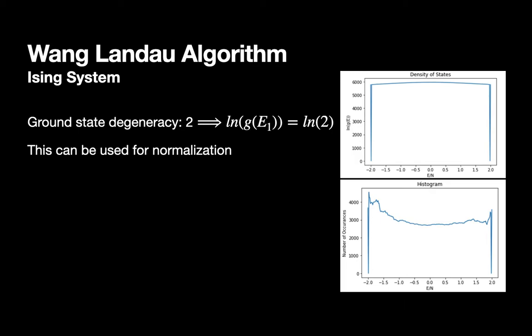Here we'll be leveraging the fact that the density of states for the ground state of our system is really easy to find. Since the ground state is when all of the spins are the same, that being all plus one or minus one, there's really only two different configurations it can be in. So here we'll just take the natural logarithm of two and match that to our first value.